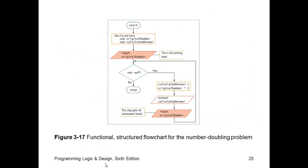Now here's an example of a functional, structured flowchart for that logic that we just saw. Get the original number. Entry point to the loop. It's not end of file. Calculate the answer. Output the answer. Get the next number. And then the flow arrow returns to the question.